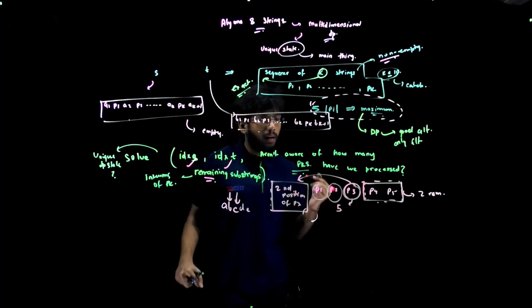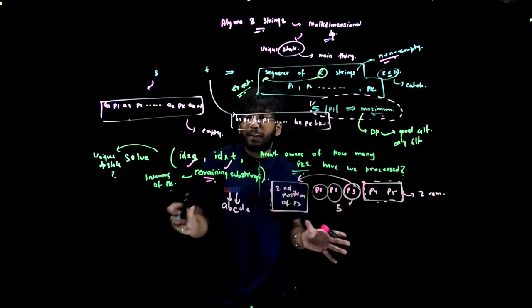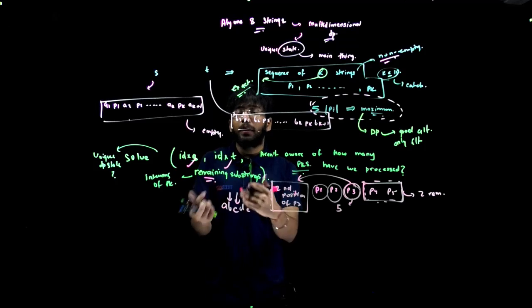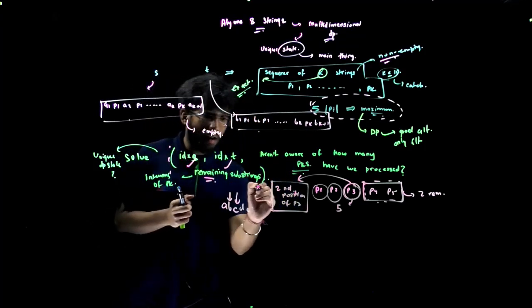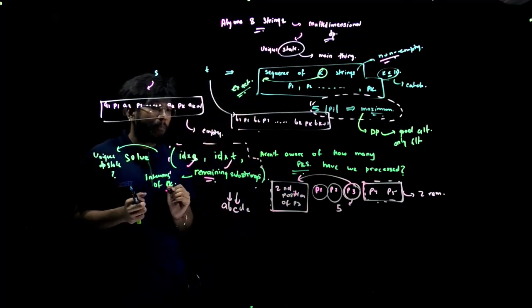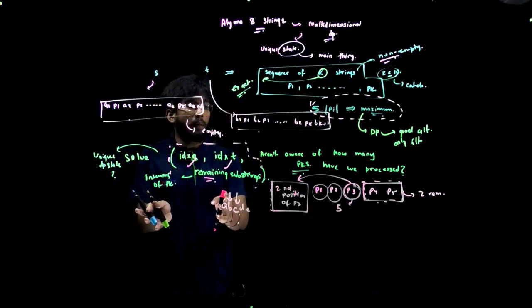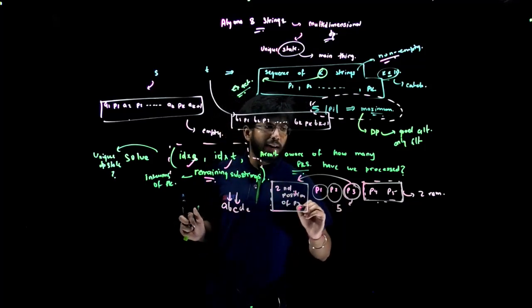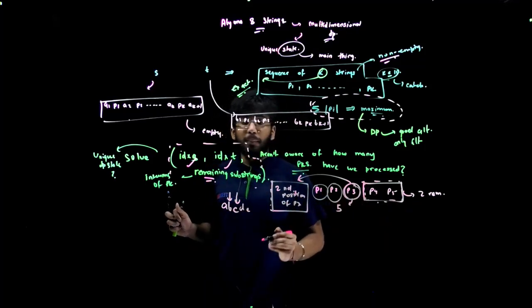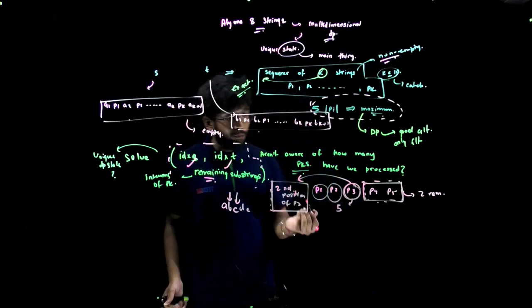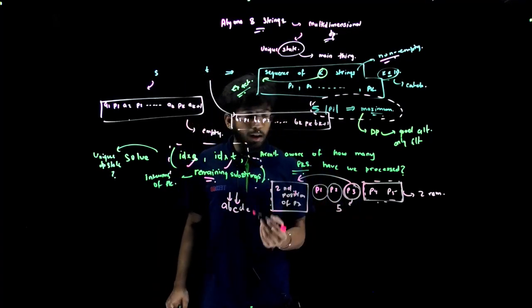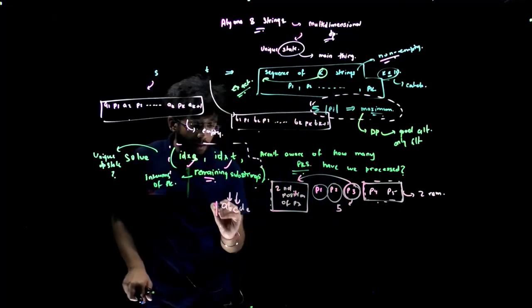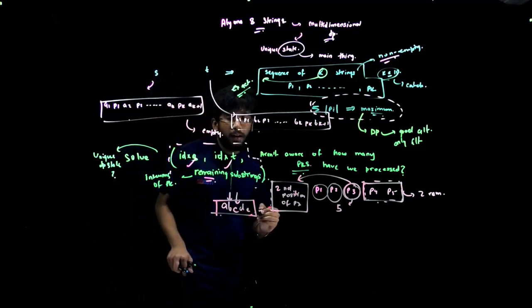That's the issue. We have two different states existing. However, we have combined those states into just one state. This is surely not a unique state, because two states correspond to this particular point. For example, if we are at the second position ab in p3, then also we have two remaining substrings. And similarly, if we are at the third position, then also we have two remaining substrings. Actually there's some flaw over here.